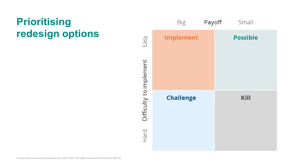Let us consider the redesign options from the equipment rental process. First, we had the possibility of eliminating approvals for small rental requests. That option has a relatively small payoff but is relatively easy to implement — all we have to do is put in place guidelines that tell process workers precisely when approval is required and when it is not.